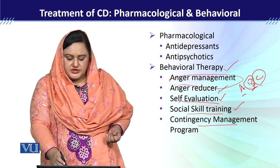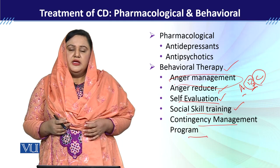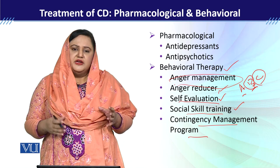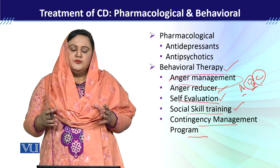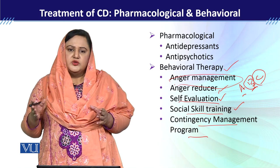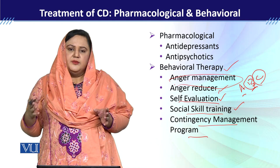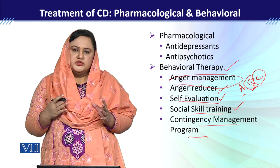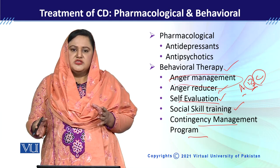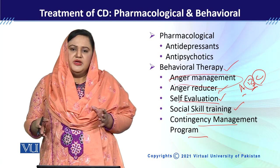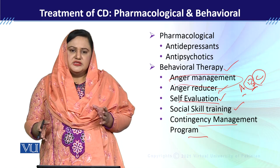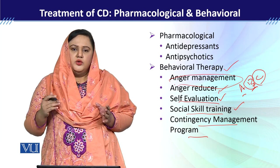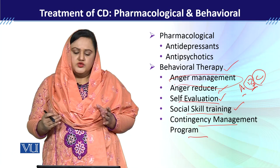Then the contingency management program is helpful for parents. We guide parents so that if the child exhibits any negative behavior, they must make sure the child faces its consequences. It is not acceptable to ignore the behavior once and punish the next time. If the child shows negative behavior once, they face the same consequences; if they show the same behavior a second time, they face the same consequences again. Discipline must be consistent, and inconsistency must be eliminated from disciplinary acts.